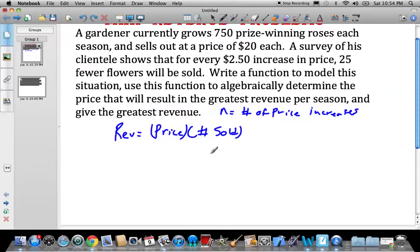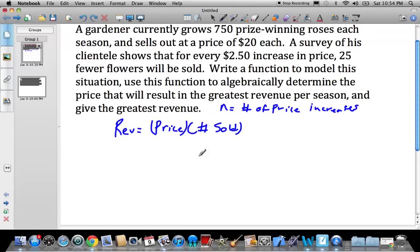It's easy to create two linear equations for this situation. So the price is going to be, well, they started at $20 and he's going to increase the price $2.50, and he can do that again and again, so $20 plus $2.50n. For one price increase, the price is $22.50, and for two price increases, just keep going $2.50 and so on. Now, for every price increase, he's going to have 25 fewer flowers sold, so he starts out at 750 sold minus 25n, and so he loses 25 customers for every price increase.